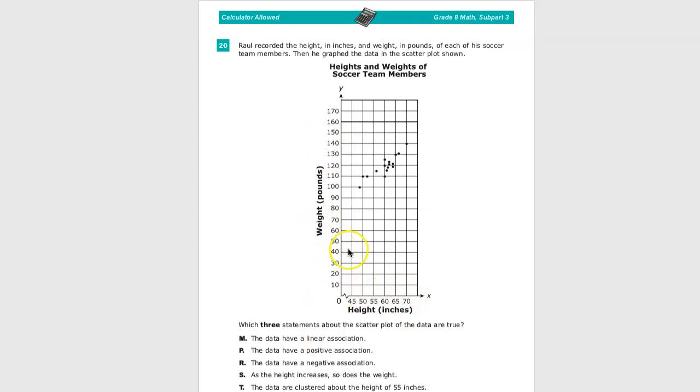And then weight is in the vertical axis, so this is the dependent variable, the way it's set up. And I can see that the dots, as they move to the right, tend to move up a little bit.